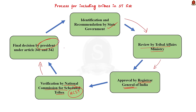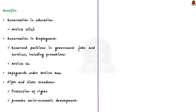Once approved by the National Commission for Scheduled Tribes, the list is submitted to the President and his decision is final. The President may issue a notification for the inclusion of tribes by the powers vested under Article 341 and 342. This is the overall process for including a tribe under the Scheduled Tribe list. Now we shall look into the benefits of inclusion under the Scheduled Tribe list.